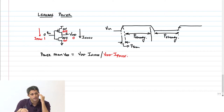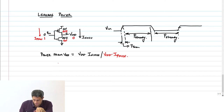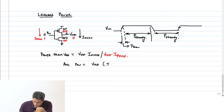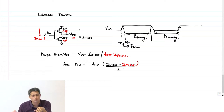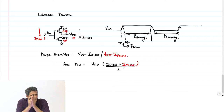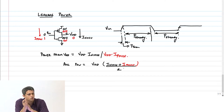So the average power is VDD × (I_NMOS + I_PMOS) / 2 across the entire cycle. Unlike dynamic power or short circuit power, this does not depend on the clock frequency.